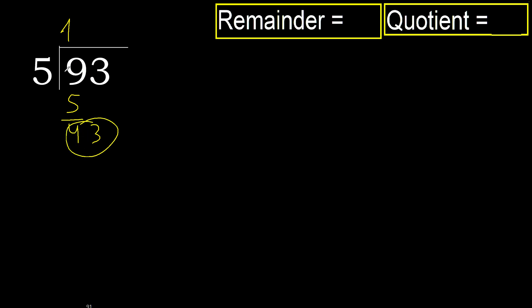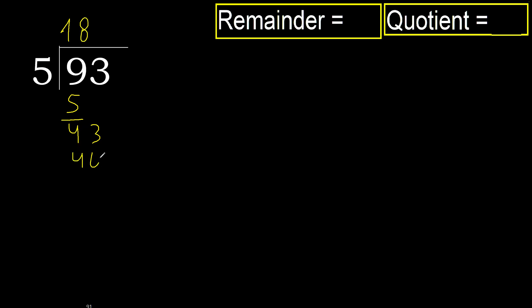Now we have 43. 5 multiplied by 9 is 45 — that is greater. 5 multiplied by 8 is 40 — not greater. So subtract: 43 minus 40 is 3. Next.